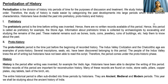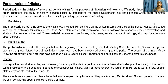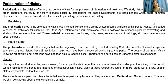In medieval history, we try to understand how the Mughals came to India, how the Turks came and ruled India, and how the Delhi Sultanate was established in India — all this comes under the category of medieval history. And in modern history, it basically talks about the British rule and how the British came and ruled India for a long period of time.